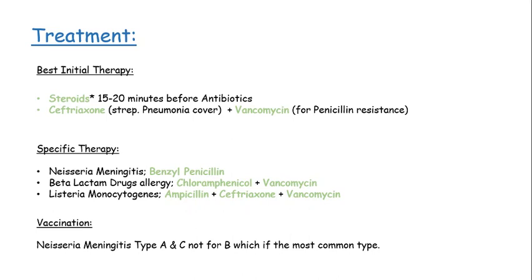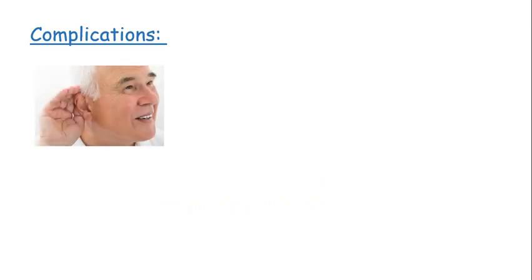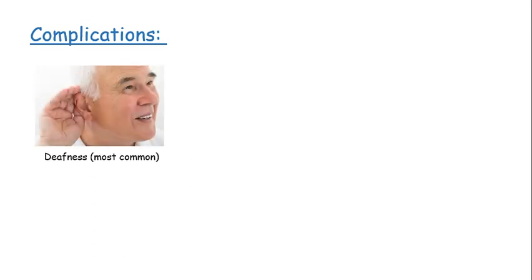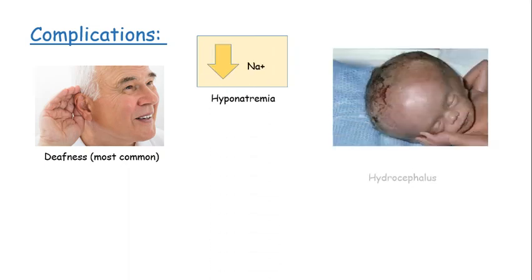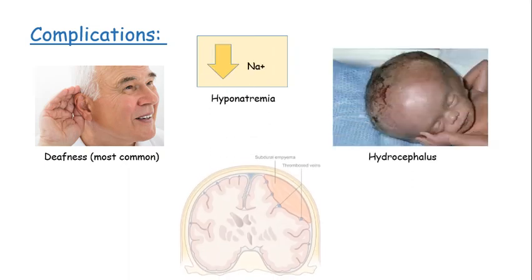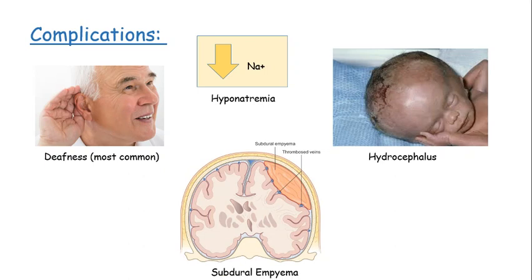Vaccines are available only for Neisseria meningitidis types A and C, not for type B, which is the most common type. Complications include deafness (the most common complication), hyponatremia, hydrocephalus, and subdural empyema.